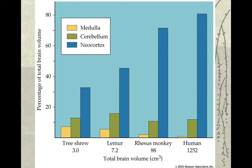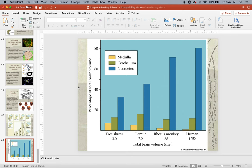The tree shrew, lemur, and rhesus monkey all have bigger medullas, but we certainly have a much larger neocortex. And that is the end of the chapter.